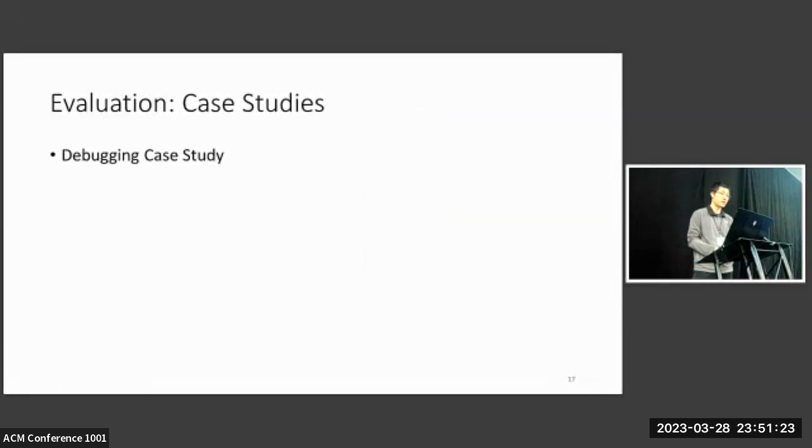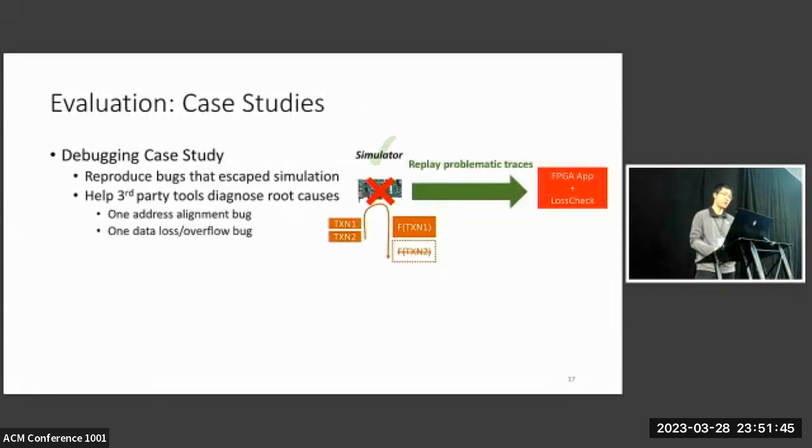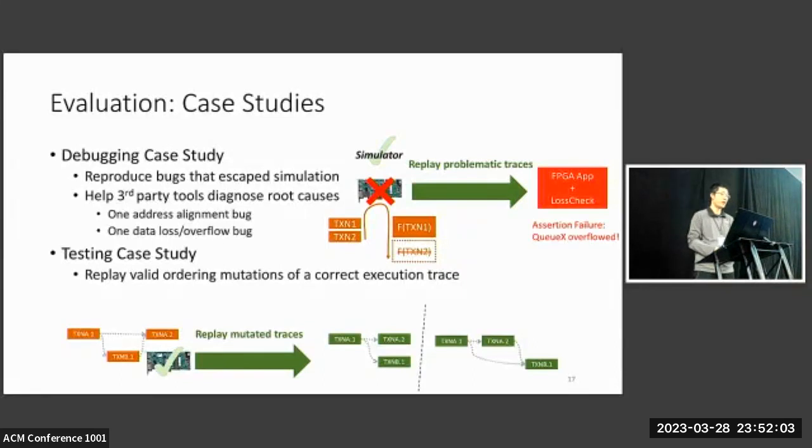And then let's take a look at those case studies as an end-to-end example of how Vidi works. In the debugging case study, we use Vidi to reproduce bugs that escape simulation and help third-party tools diagnose the root causes. For example, there is a data loss bug where not every input transaction is processed by the FPGA. We use Vidi to replay the problematic trace on an FPGA application that is instrumented by a third-party tool called LossCheck. And during replay, LossCheck is able to figure out what specific queue overflowed and caused the problem. And for the second testing case study, we use Vidi to replay mutations of a correct execution trace that has different but valid alternative orderings. And Vidi is able to find bugs that handle certain corner cases incorrectly.